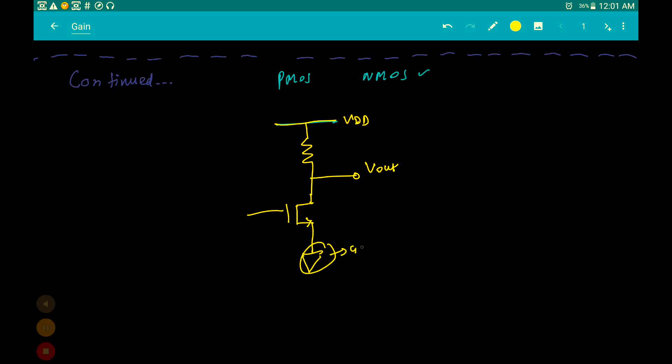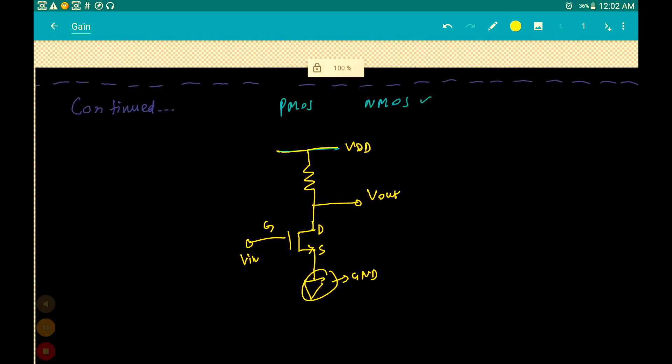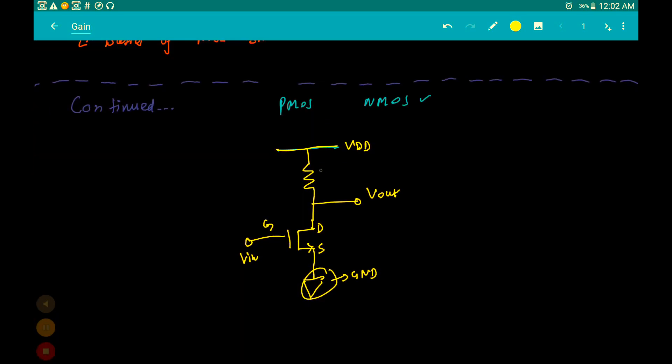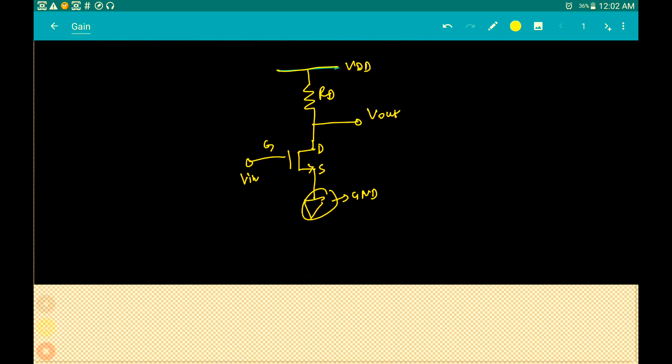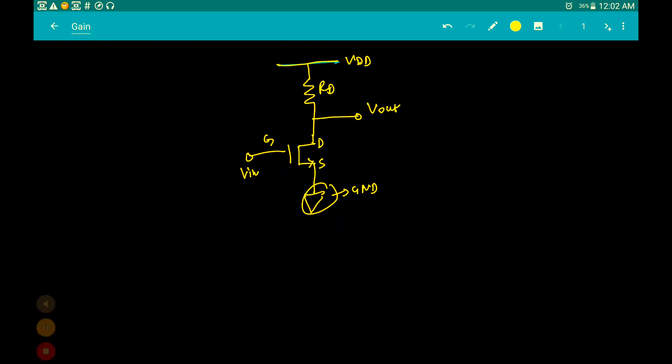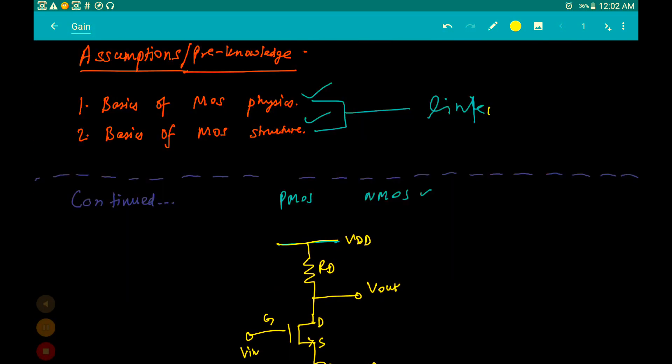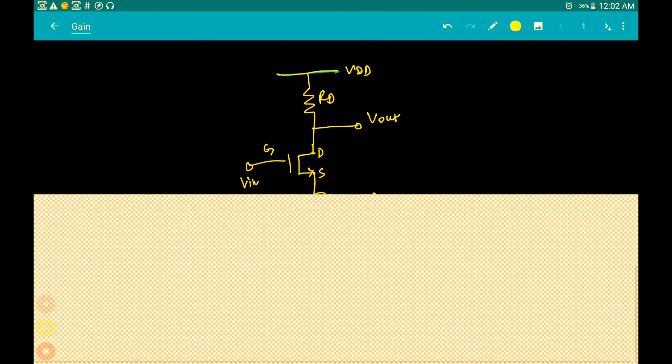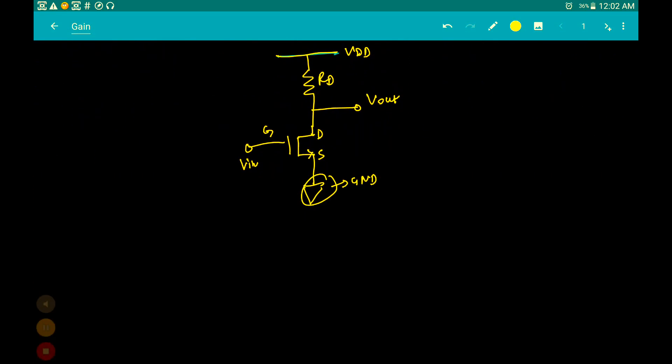This is ground, this is the source terminal, the drain terminal, the gate terminal, and we are giving input to the gate terminal. This resistance is defined to be RD. If you are not understanding any of this, I suggest you again go to this link, read the book, and you'll understand.